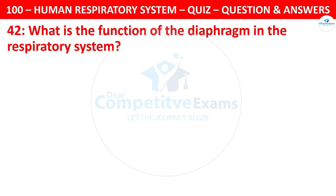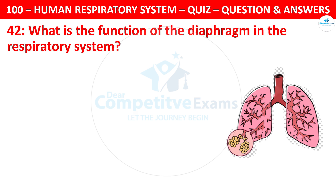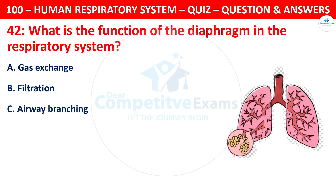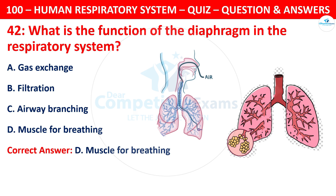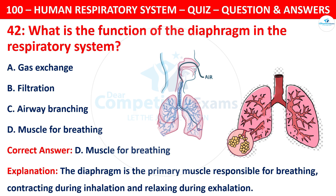Question 42: What is the function of the diaphragm in the respiratory system? The options are: gas exchange, filtration, airway branching, or muscle for breathing. The correct answer is D — muscle for breathing. The diaphragm is the primary muscle responsible for breathing, contracting during inhalation and relaxing during exhalation.